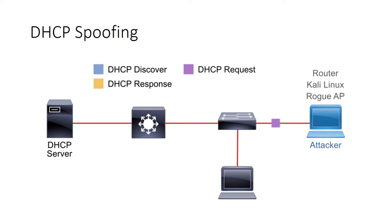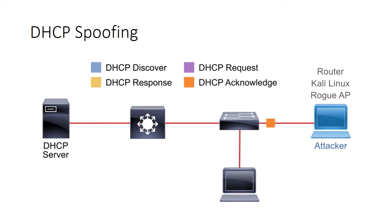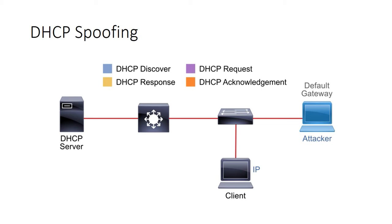So now the client sends traffic to the gateway, and it goes to the attacker. The attacker is using Wireshark, TCP dump, or whatever other application to capture those packets and store them, but at the same time forwards that traffic on to the default gateway, which can then forward that traffic out to the internet or wherever else it may be going. The client has no idea that he is now part of a man-in-the-middle attack. So DHCP spoofing attacks spoof the DHCP server and end up leading to man-in-the-middle attacks.